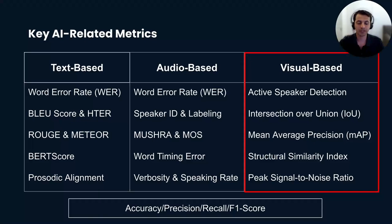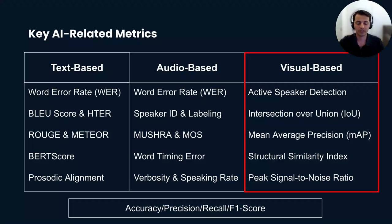Mean Average Precision (MAP) is used in object detection and segmentation, providing a combined measure of the model's precision and recall across different thresholds. Structural Similarity Index (SSIM) is a perception-based model often used in image quality, compression, and restoration assessments. Peak Signal-to-Noise Ratio (PSNR) is widely used for measuring the quality of reconstruction in image compression.